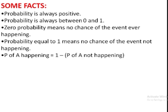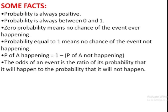Probability of something happening is equal to 1 minus probability of that thing not happening. The odds of an event is another term used to discuss chance. The odds of an event is the ratio of its probability that it will happen to the probability that it will not happen.